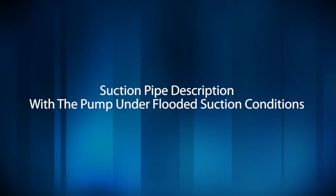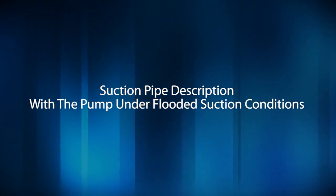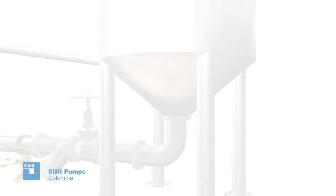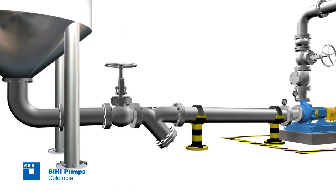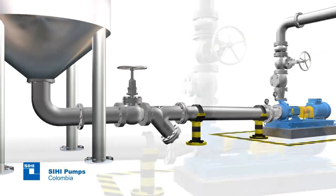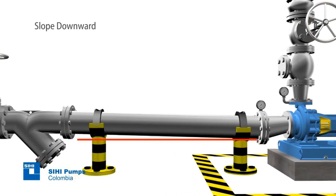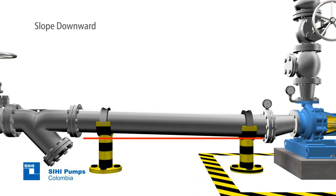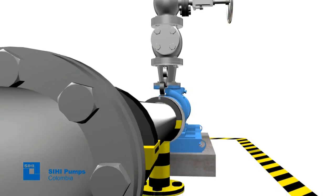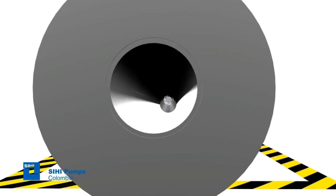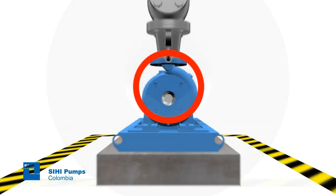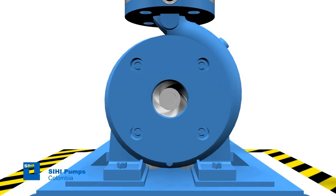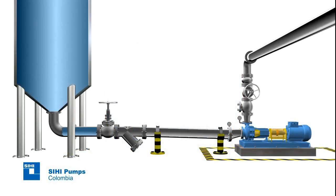Suction pipe description with the pump under flooded suction conditions. When the installation is designed to work using the flooded suction method, meaning with the tank from which the fluid is taken above the pump level, the suction pipe must be mounted at a slight downward angle towards the pump to avoid air pocket formation. Remember that the pipe nominal diameters must be at least equal to the nominal diameters of the pump flanges, and the velocity of flow in this type of installation must not exceed 2.5 m per second.